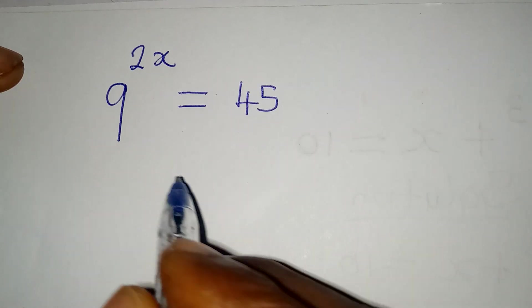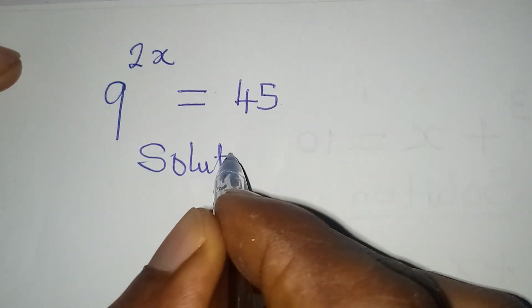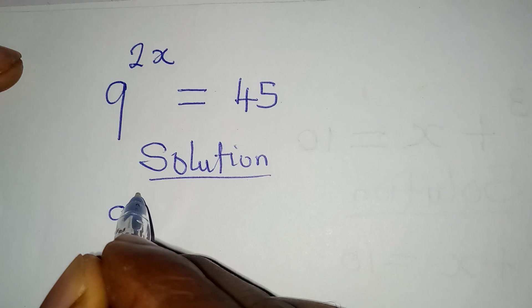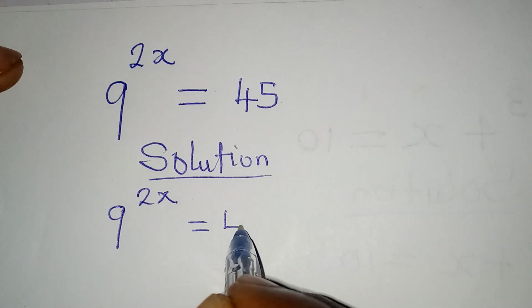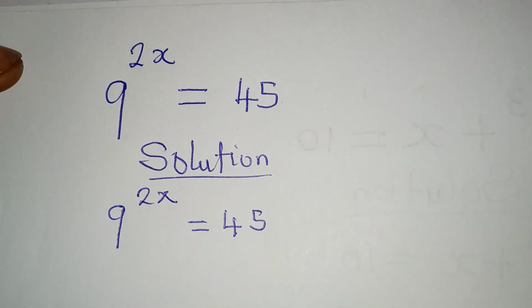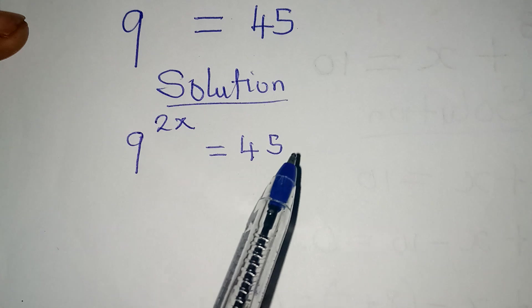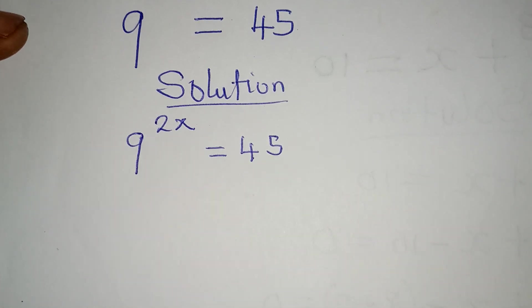Hello everyone, let's solve this problem quickly. We have 9 to the power of 2x to be equal to 45. Now we cannot write 45 in index form, and because of that, I want us to take a step further.